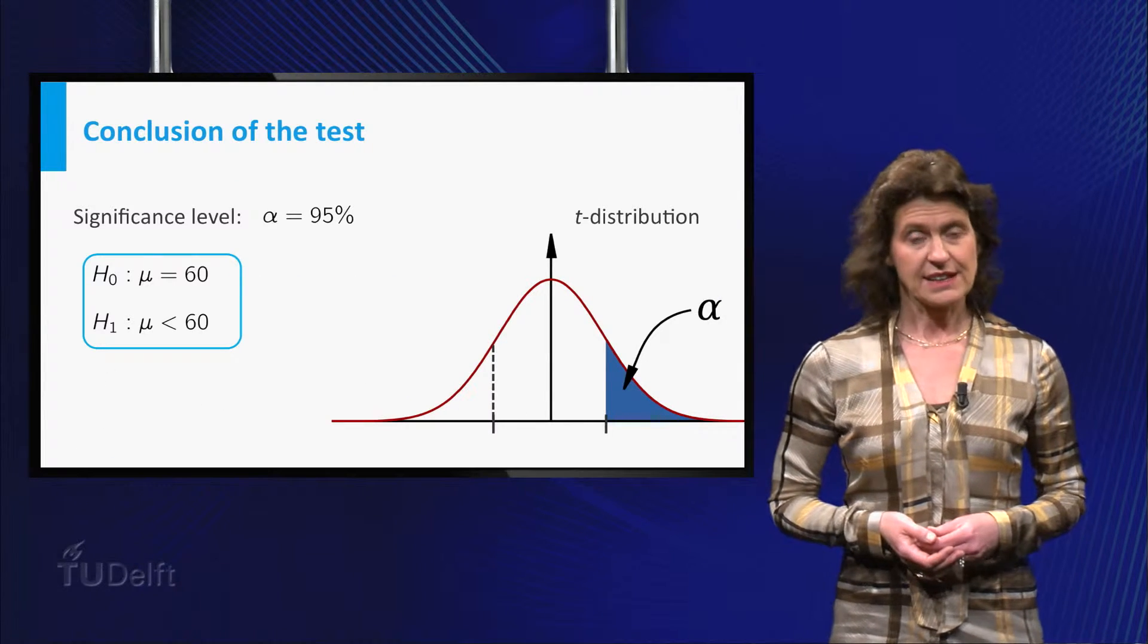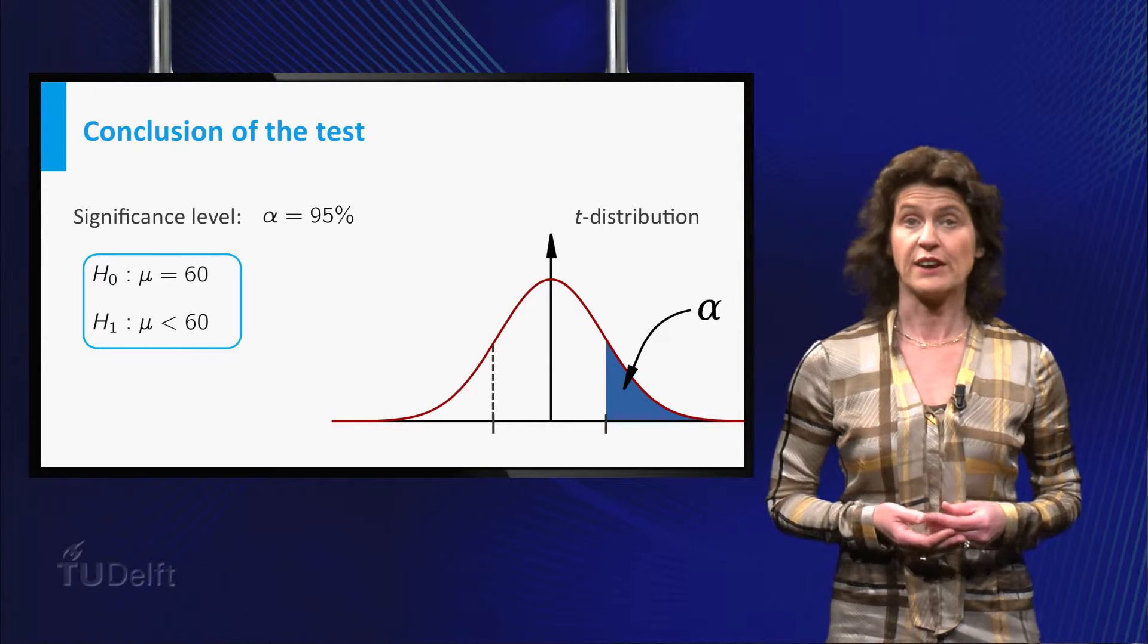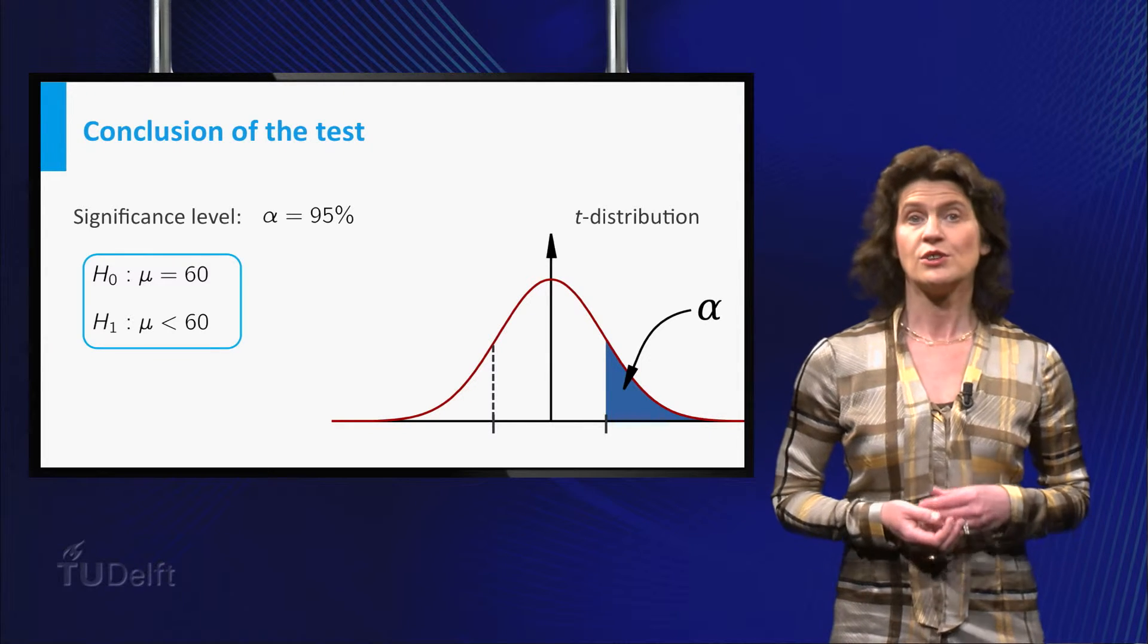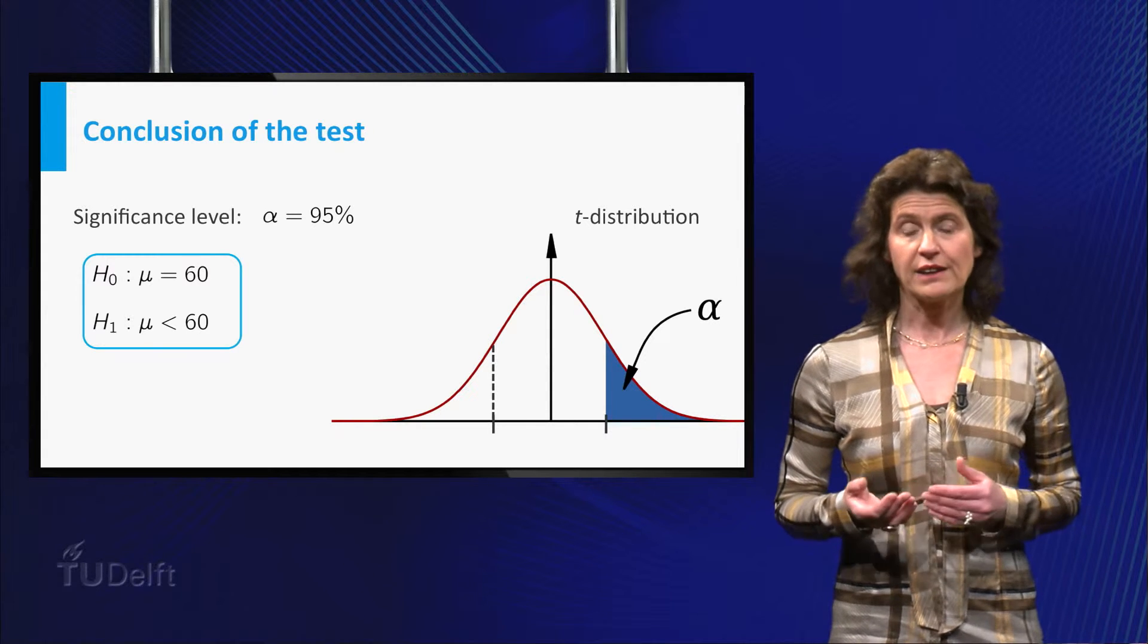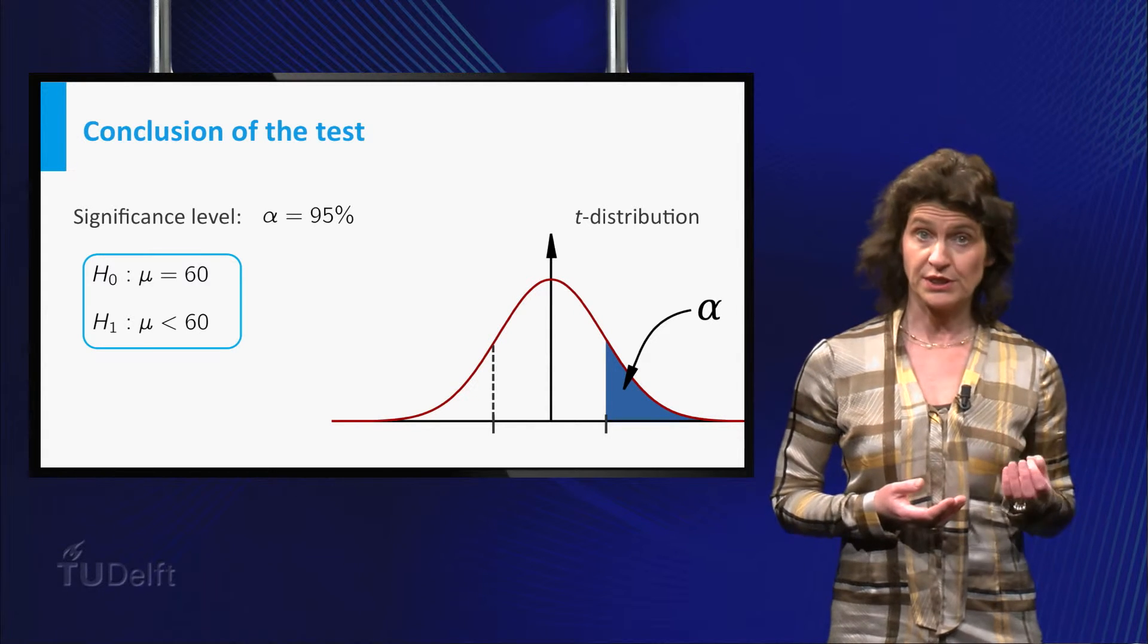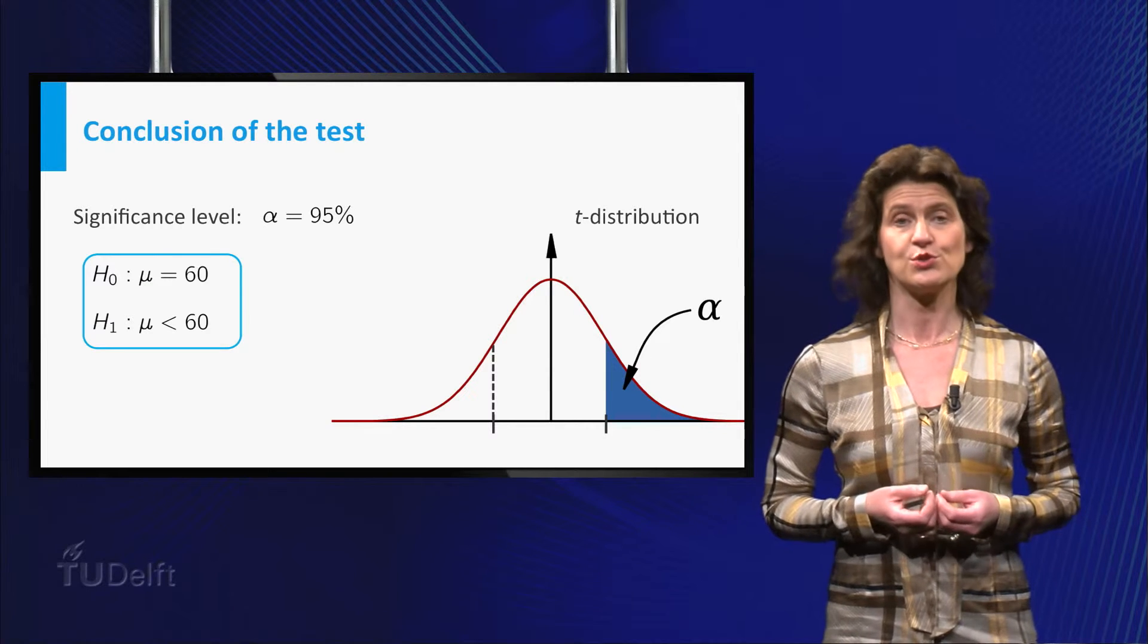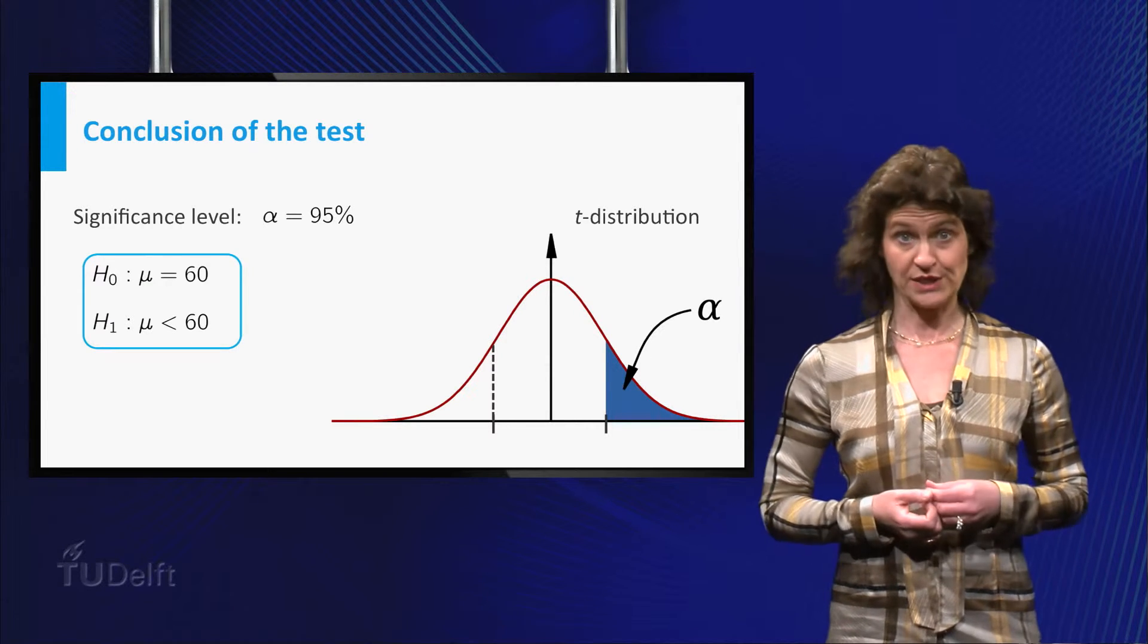Let's perform the test at a significance level of 95 percent. To decide whether you reject the null hypothesis, you have to compare the outcome of your test statistic t to the critical value of the t-distribution with 24 degrees of freedom.